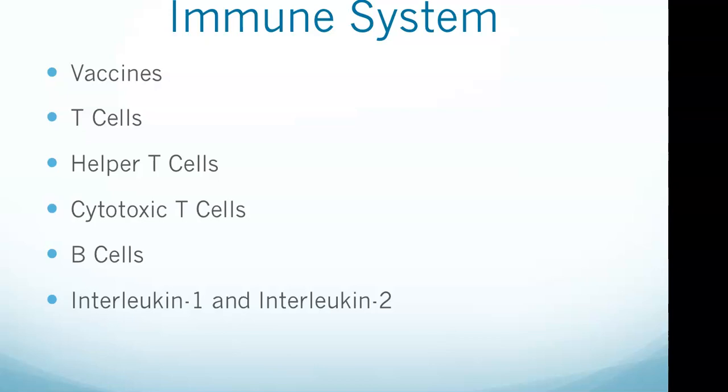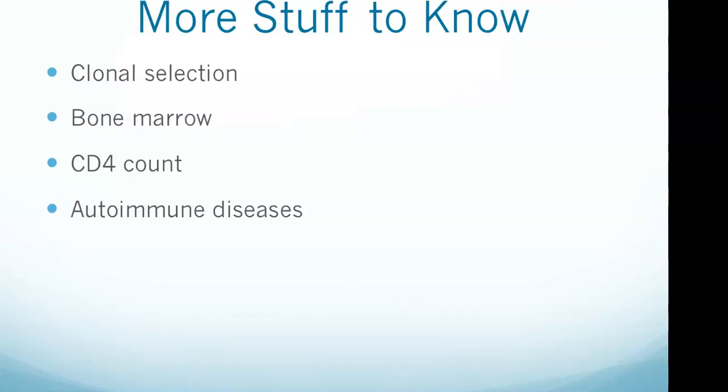Clonal selection is the fundamental mechanism in immunity. B and T lymphocytes bind to specific pathogenic molecules. Once selected, these B and T lymphocytes make millions of copies of themselves. Bone marrow is important for producing blood cells including those that attack infection in the bloodstream. However, these cells do not prevent infections such as bacteria from entering the bloodstream.